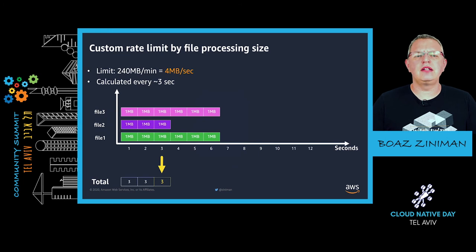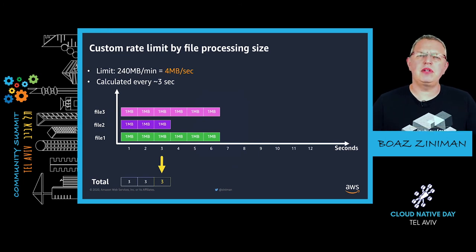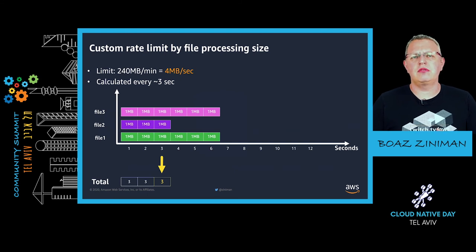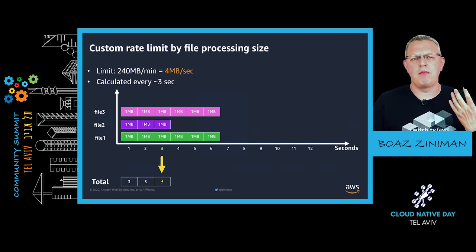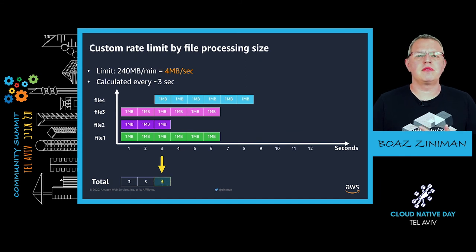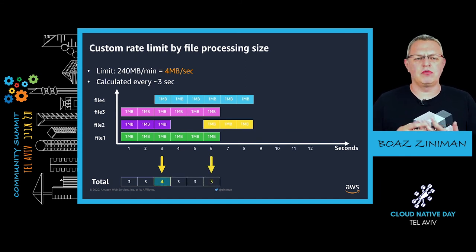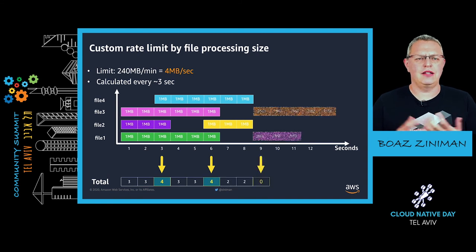We have customers creating their own rate-limiting mechanisms. One example is NielsenMedia, who created a rate-limiting mechanism based on the amount of data they're processing. They make sure they're not processing more than four megabytes of data, because that's the limit of the system on the other side they're working with.